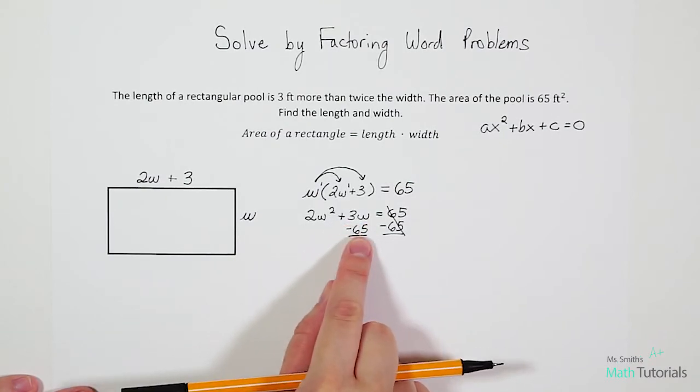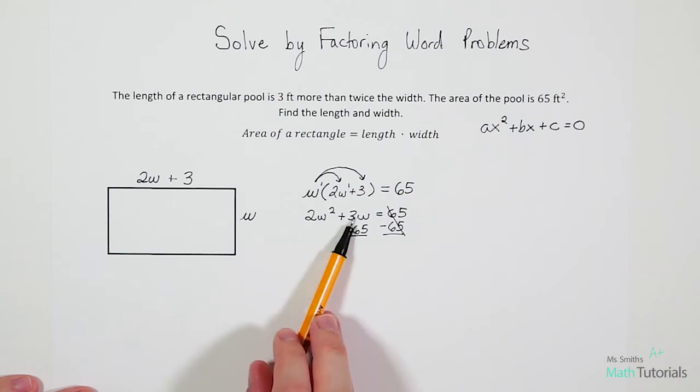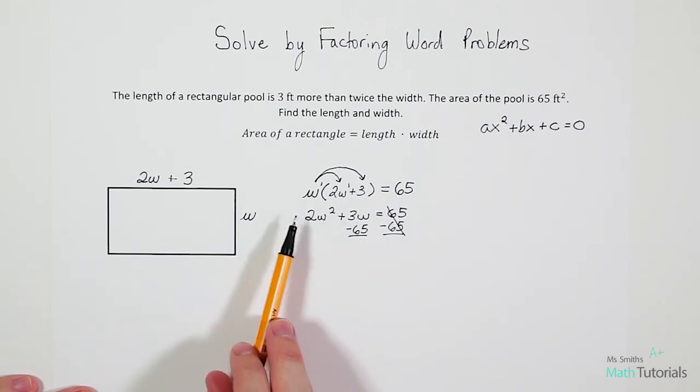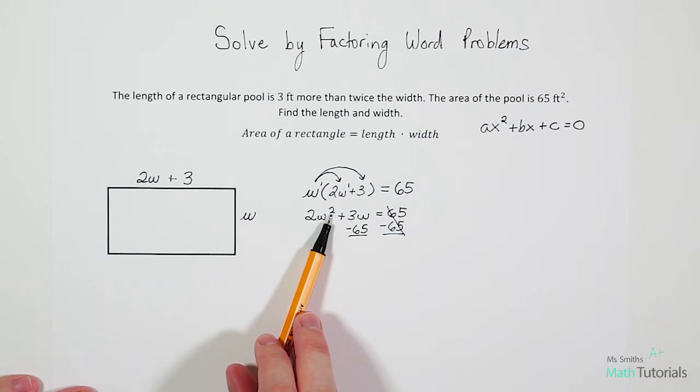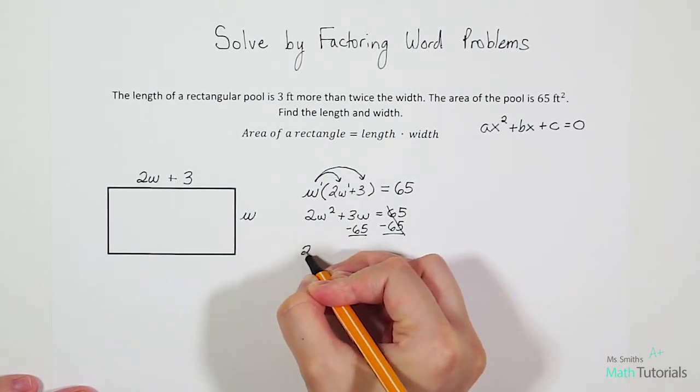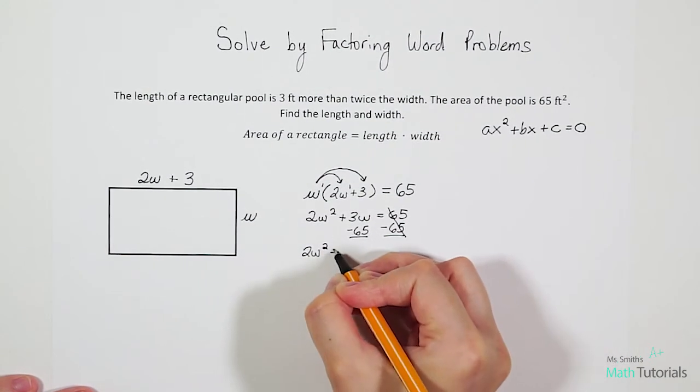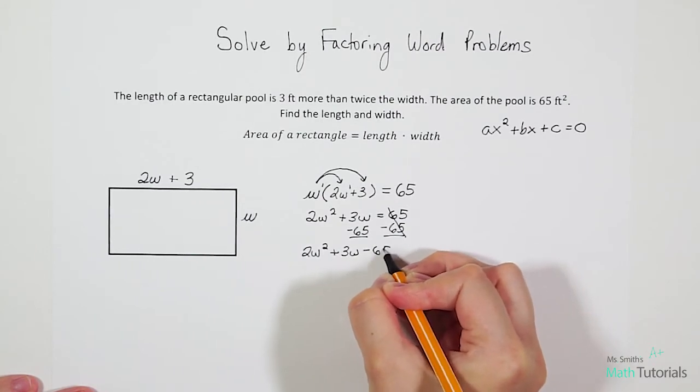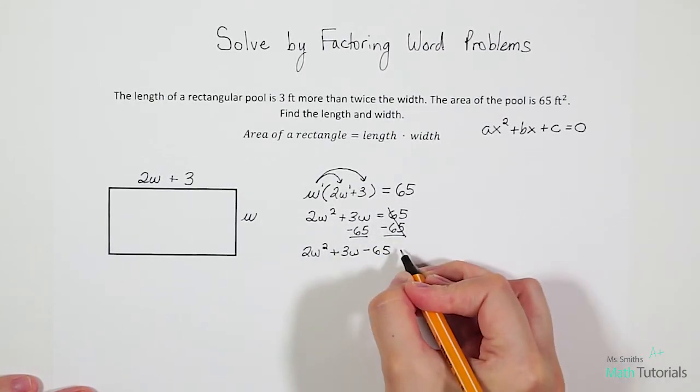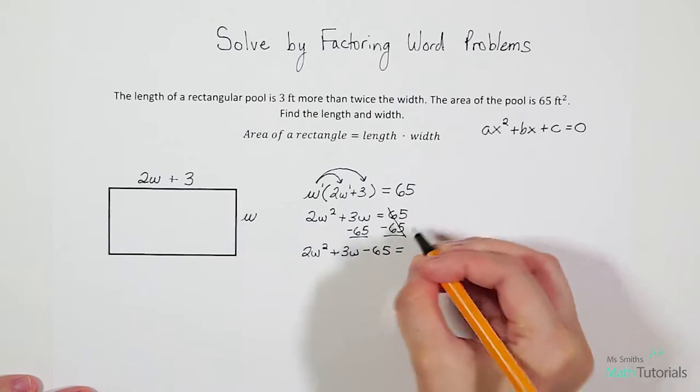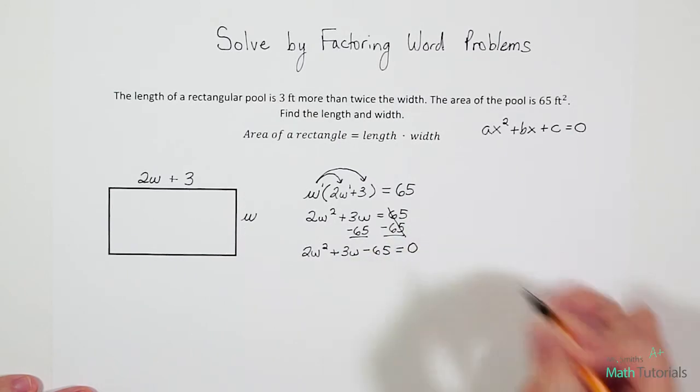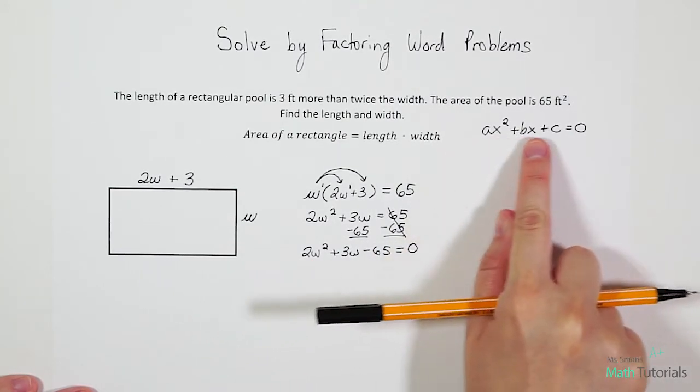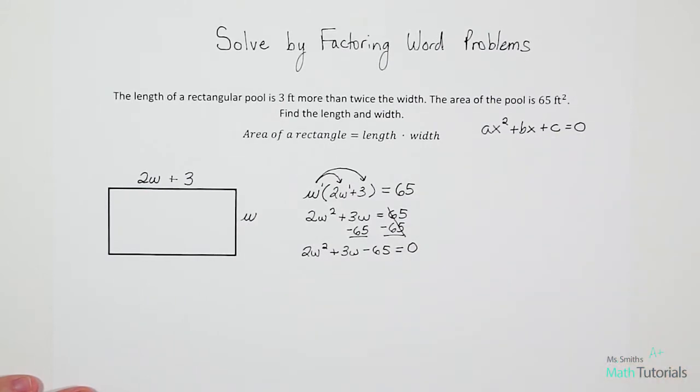65 minus 65 cancels to zero. But I can't just get rid of the 65 on this side. I've got to move it to the other side. So I also need to subtract 65 on the other side. Now, the temptation is to say, okay, well, what's 3W minus 65? We can't do that. Those are not like terms. And then I can't subtract 65 from the 2W squared either because those are not like terms. So here's what we do. We just rewrite the problem. 2W squared plus 3W minus 65. We're just tacking it on to the end. Equals, and then remember we canceled those, so we got zero. This is in standard form and we can factor it.